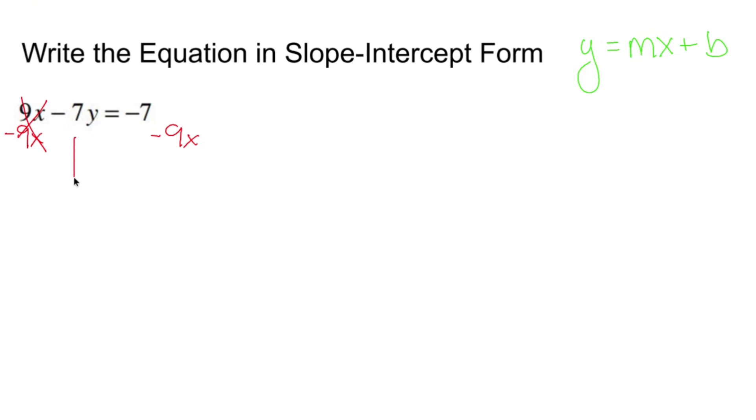What I then do is I drop down negative 7y equals. Now negative 7 and negative 9x don't combine because you are a constant and you have an x attached to it. Now I can't combine them.